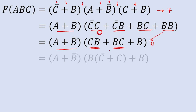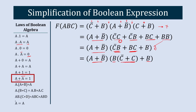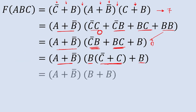Taking B common from the like terms gives B·(C-bar plus C) plus B. Since C-bar plus C follows the law A plus A-bar equals 1, we replace it with 1. The further simplified equation becomes (A plus B-bar)·(B plus B).